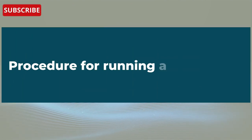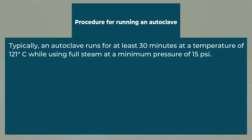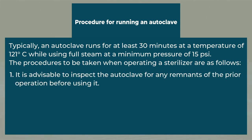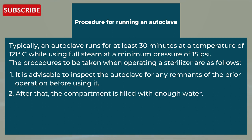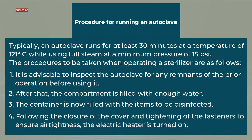Now let's see the procedure for running an autoclave. Typically, an autoclave runs for at least 30 minutes at a temperature of 120 degrees Celsius using full steam at a minimum pressure of 15 psi. The procedures are as follows: First, inspect the autoclave for any remnant of the prior operation before using it. Second, fill the compartment with enough water. Third, fill the container with the items to be disinfected. Fourth, close the cover and tighten the fasteners to ensure air tightness, then turn on the electric heater.